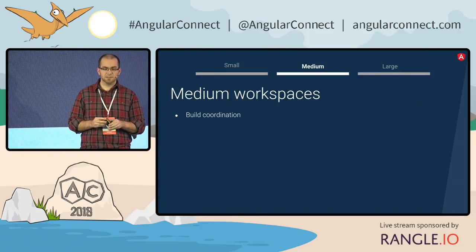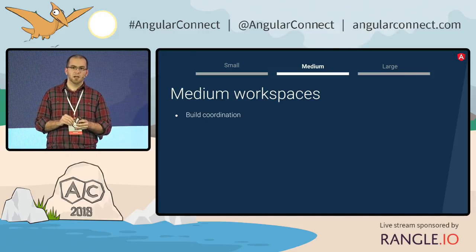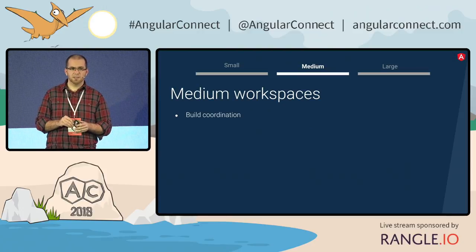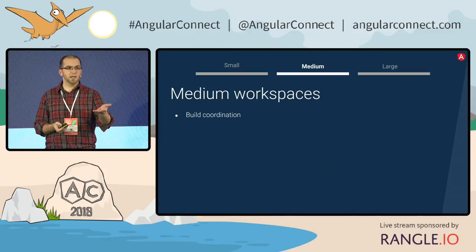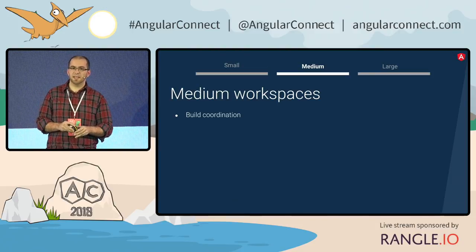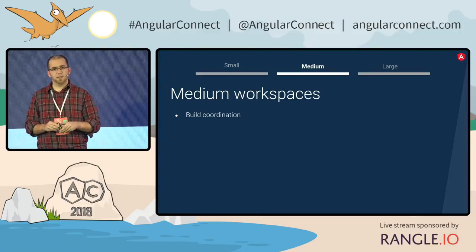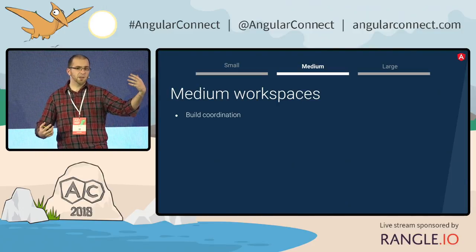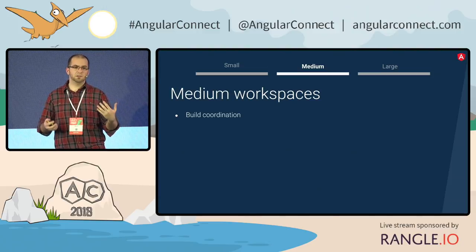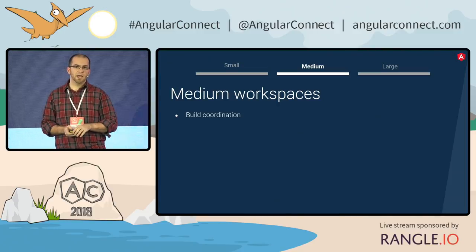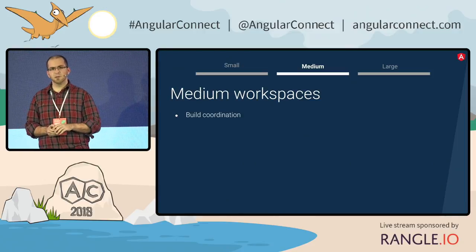When we go up to medium-sized workspaces, you start to see a couple more benefits. Build coordination is really the big one. If you have one application and one library right now, you have to remember to build the library before you build your application. If you forget to build it, your application won't succeed its build. But things get more complicated when you have several of these — libraries that depend on one another or applications that depend on multiple libraries. As this dependency graph increases, it's completely impossible to just remember to do everything by hand. This is the main way that Bazel integrates really well with the CLI.